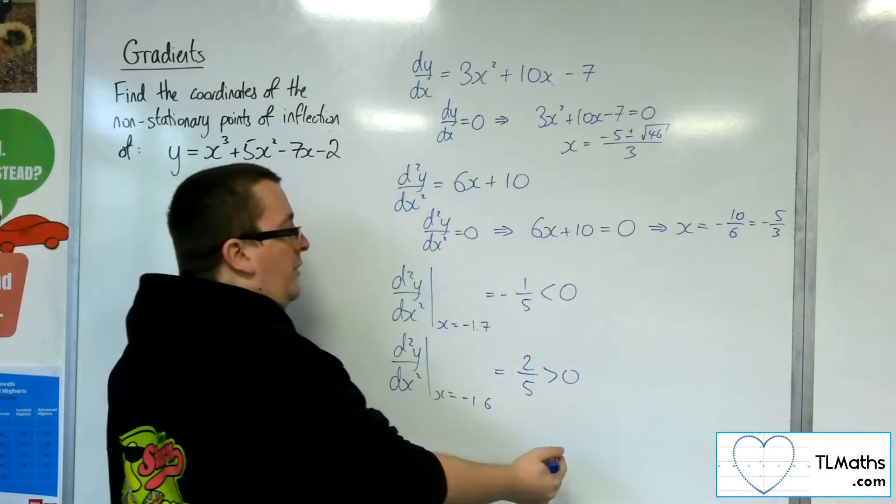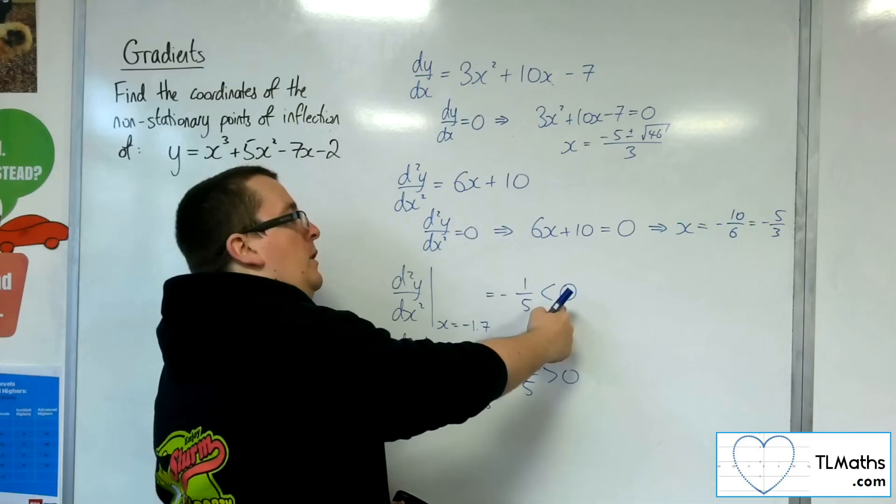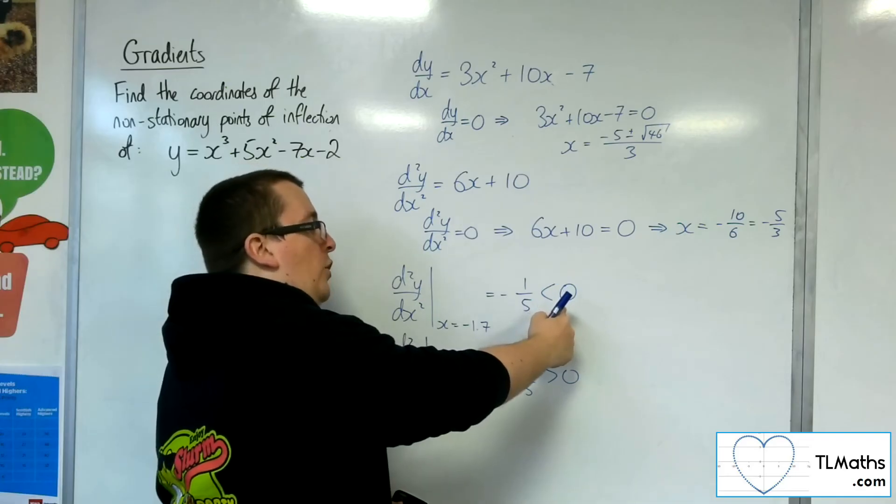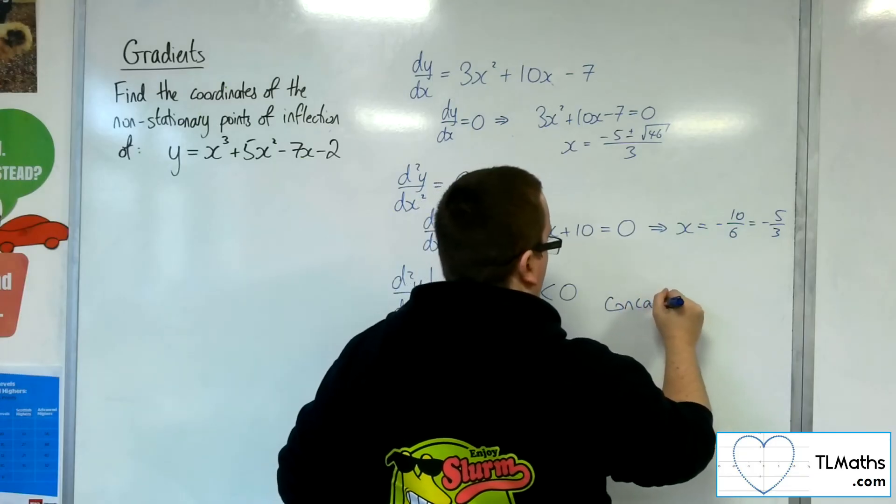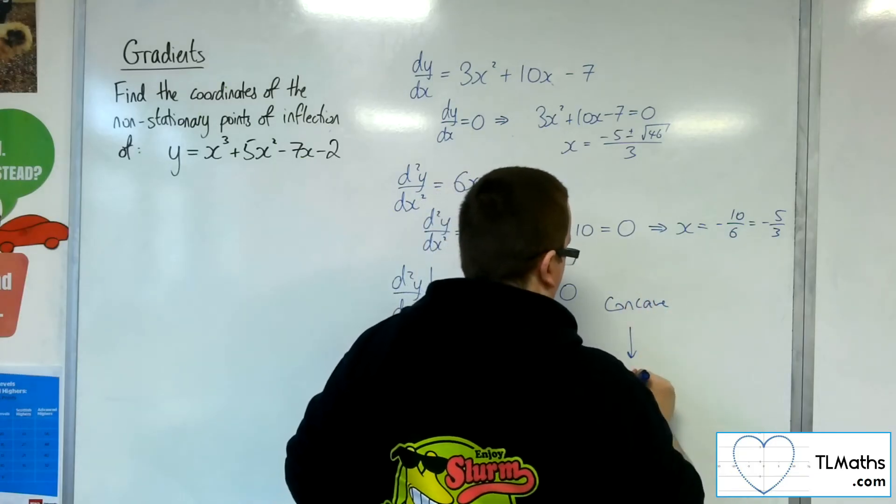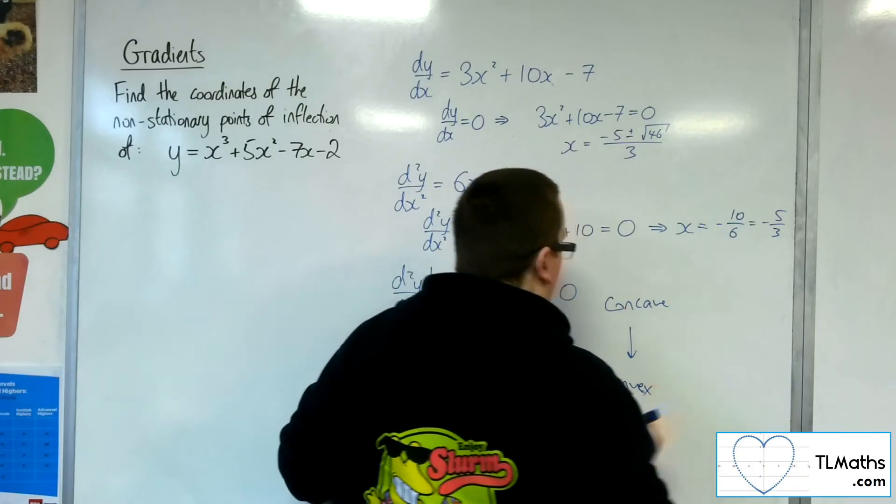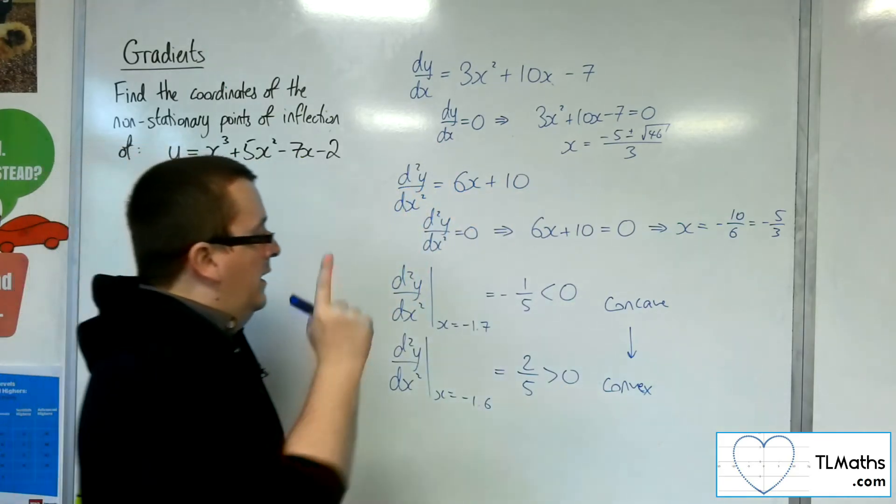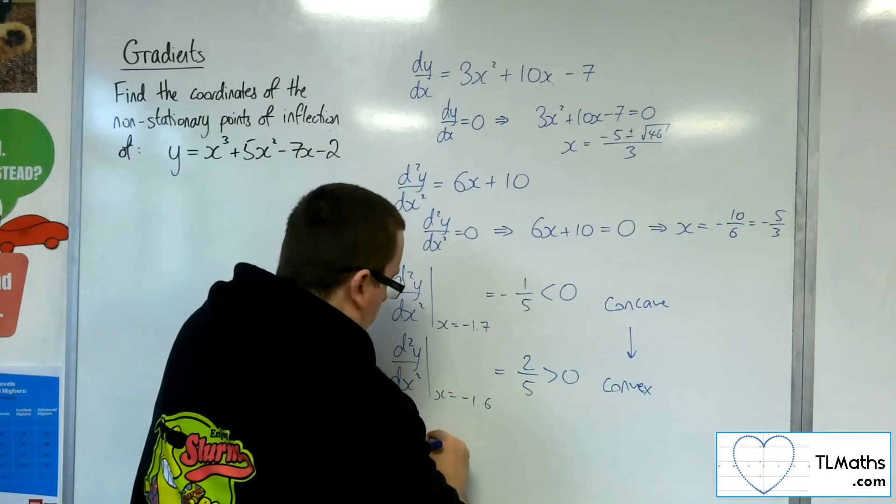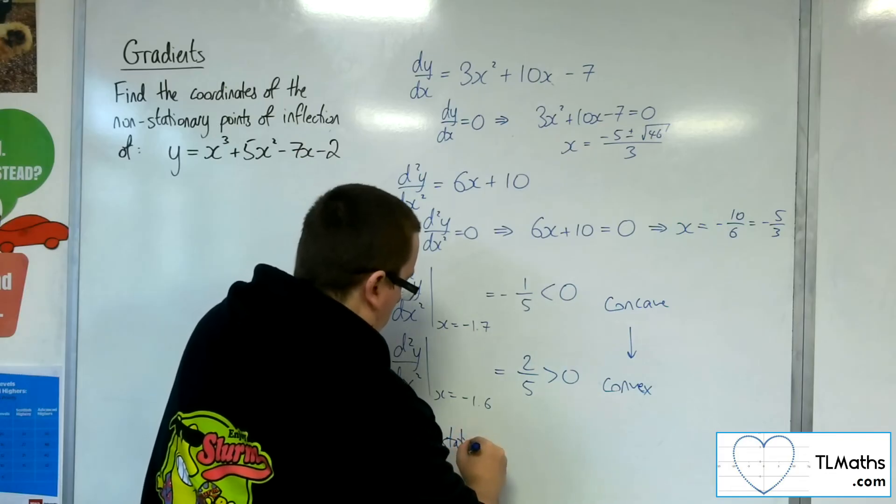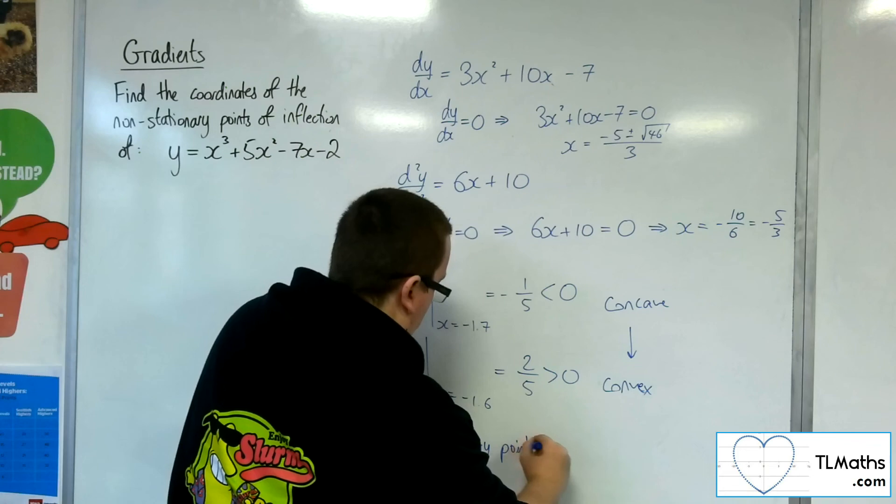Because you've got this change of sign, you're going from less than 0, so concave, to greater than 0, convex. Concave to convex. We've definitely got a non-stationary point of inflection.